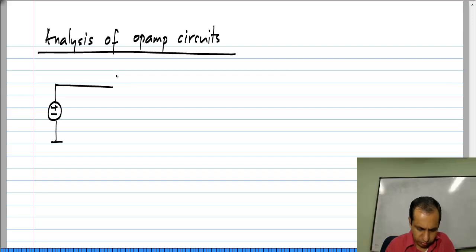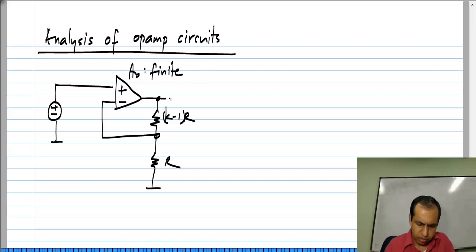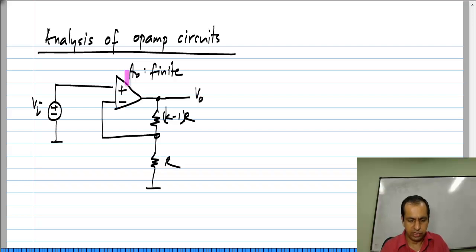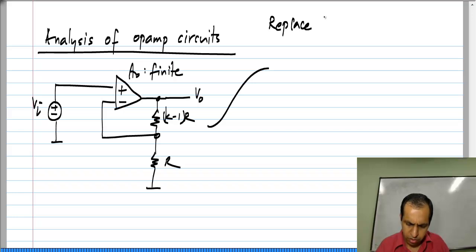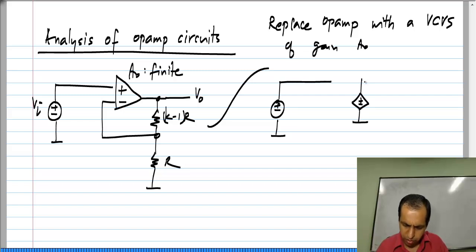Let us take the same circuit we have been considering and let us say A naught is finite, that is the op amp is not ideal. The only thing different is the symbol — all we have to do is replace the op amp with a voltage controlled voltage source of gain A naught. So my circuit becomes: this is V_D, this is A naught times V_D.